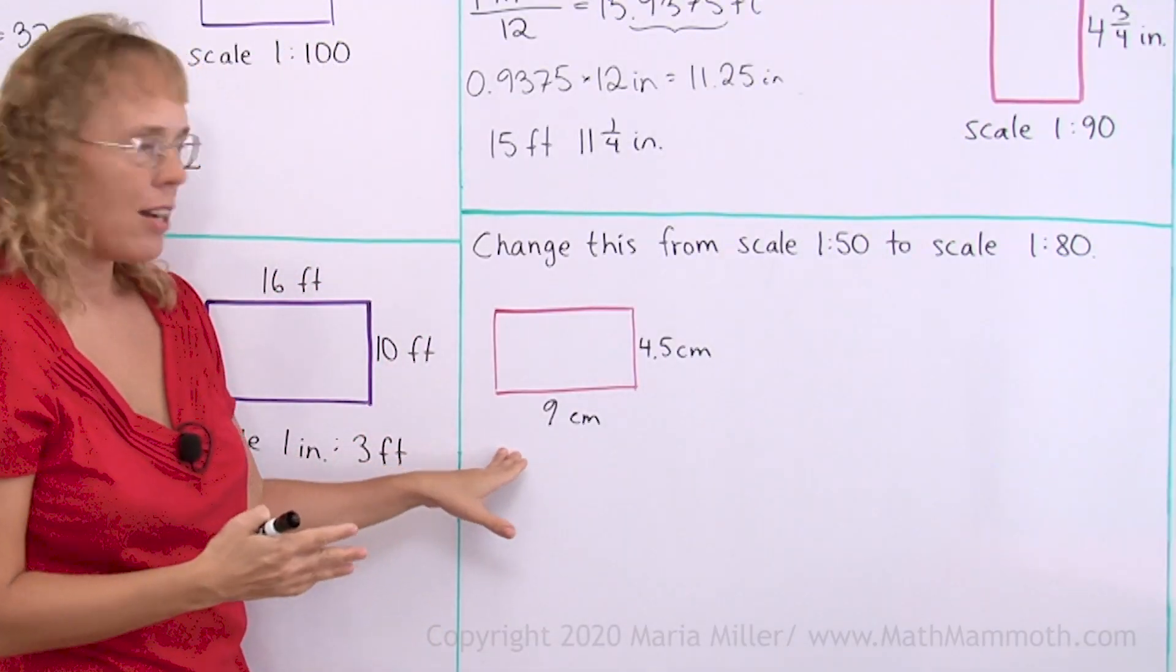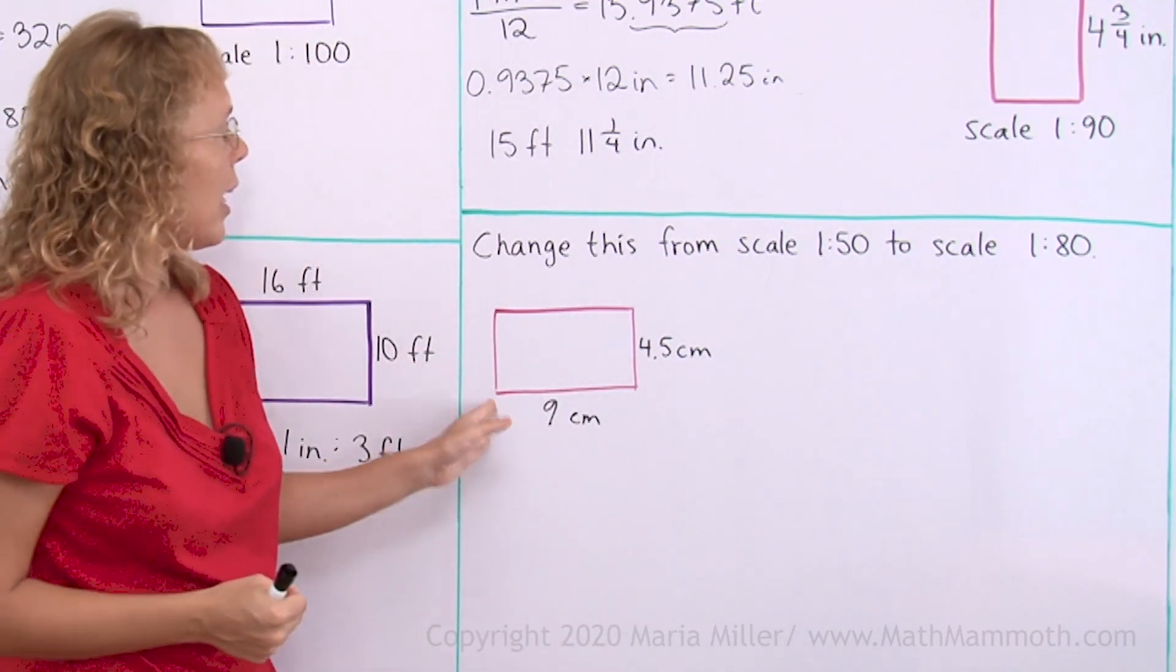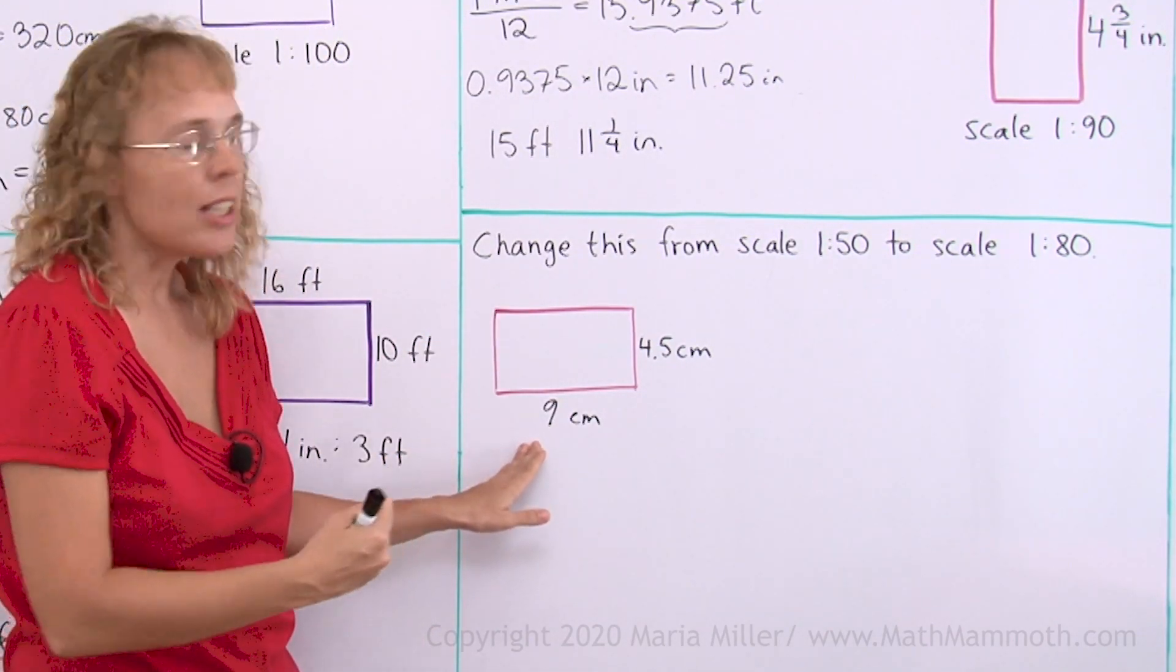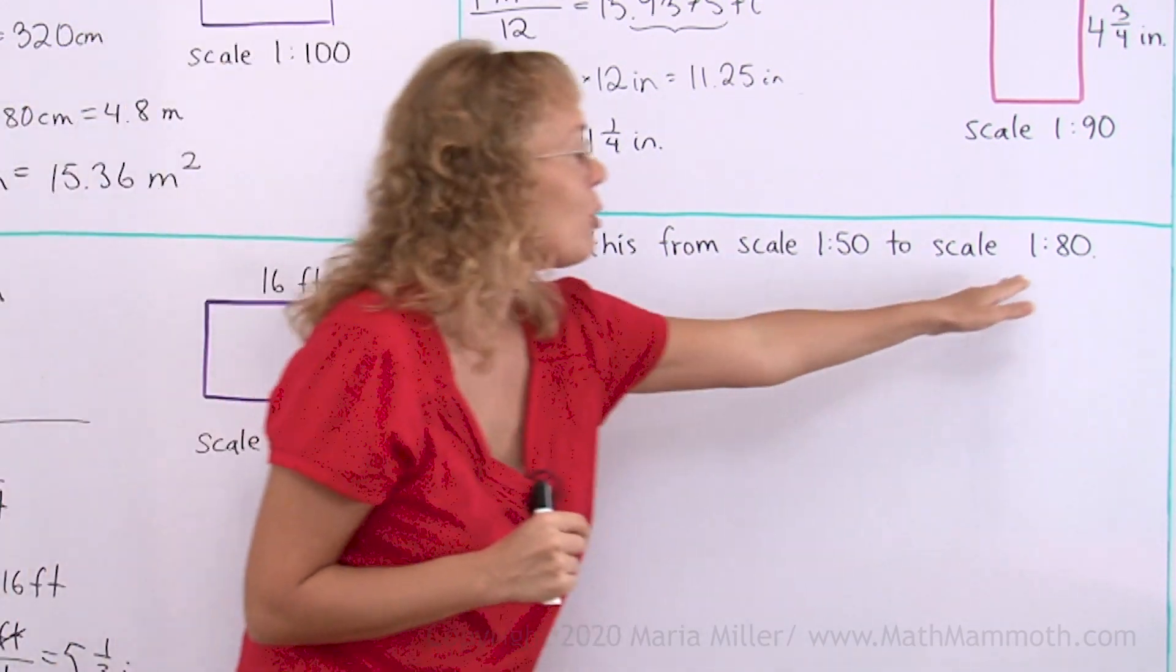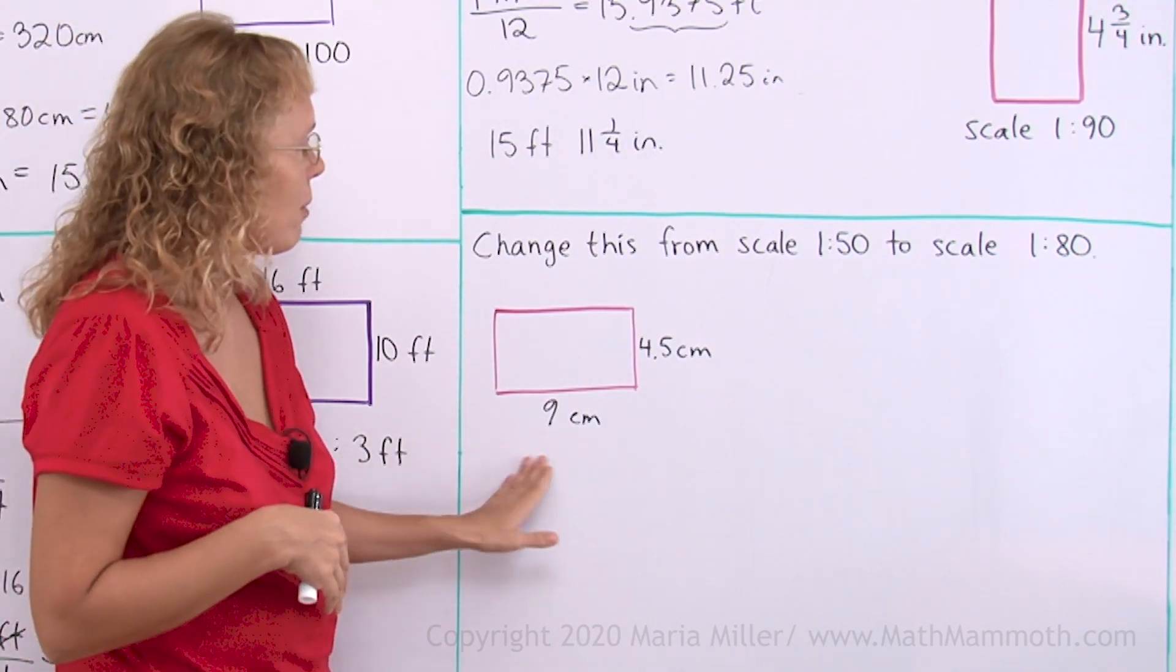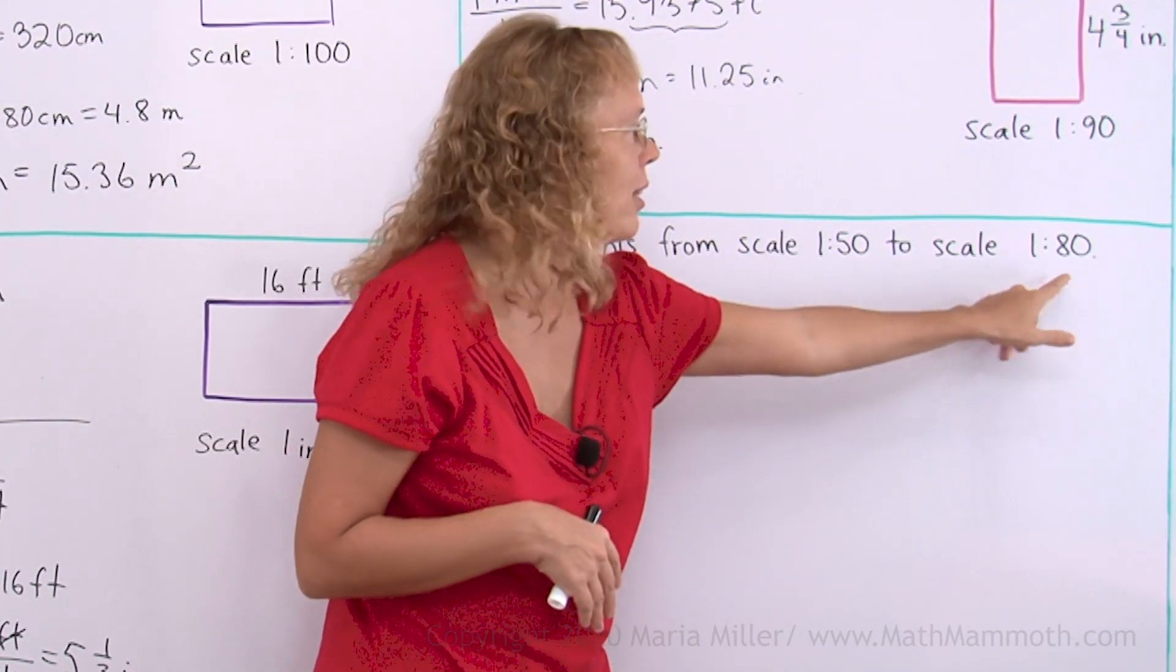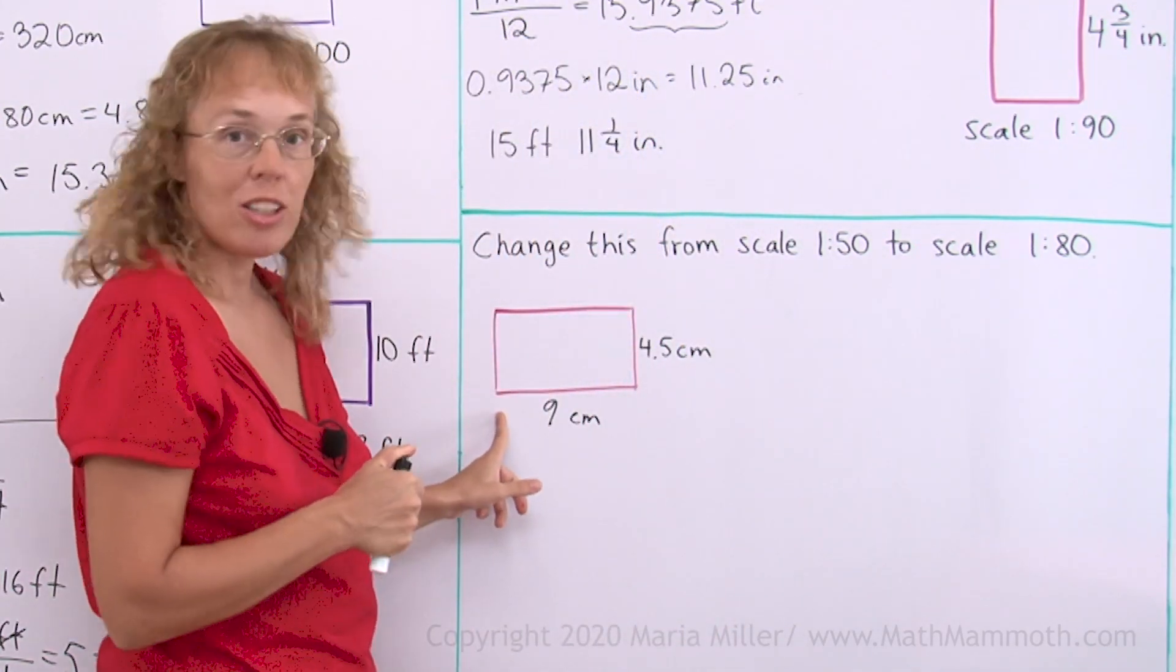Here we have a scale drawing or a floor plan of a room. And we're gonna change this. It is in the scale of 1 to 50. But if you wanted to use a different scale, such as 1 to 80, then what would you do? Now first of all, when we change from this scale to another scale where this number is bigger, then will this actually get bigger or smaller?